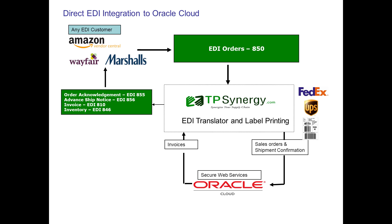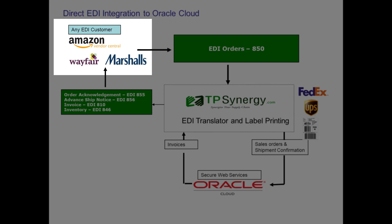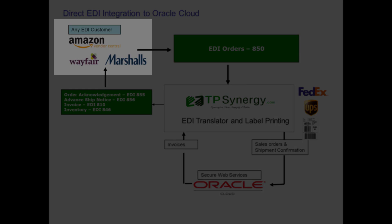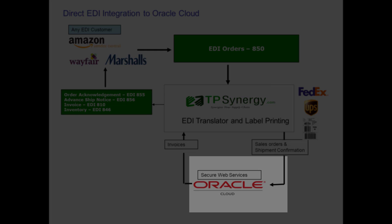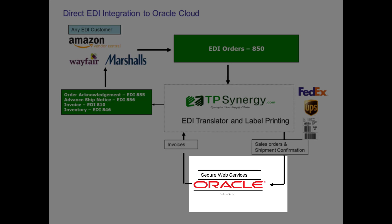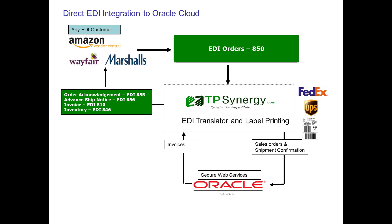TP Synergy is a fully integrated EDI system for Oracle Cloud ERP. EDI orders from customers like Amazon, Walmart, or any other EDI customer will get posted into Oracle Cloud ERP automatically. TP Synergy uses Oracle-certified web services to connect seamlessly with Oracle Cloud and transfer EDI data with customers.